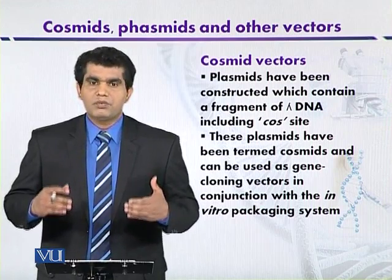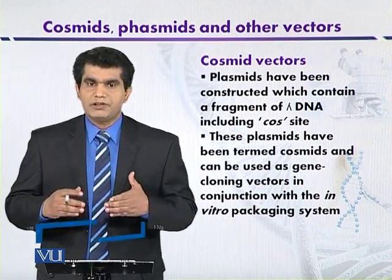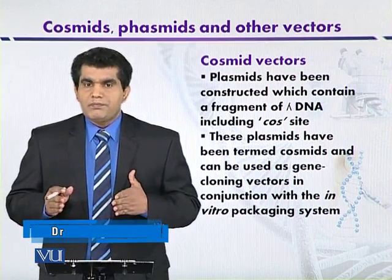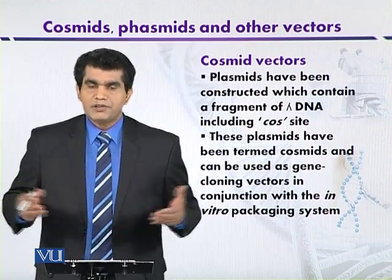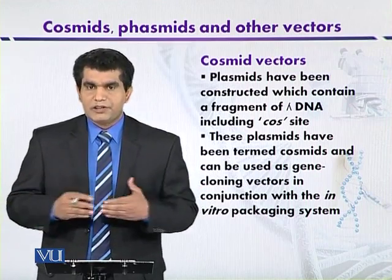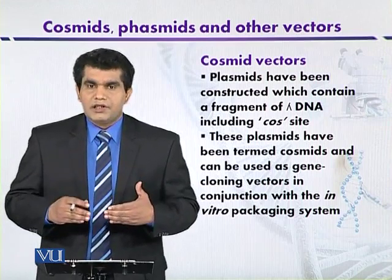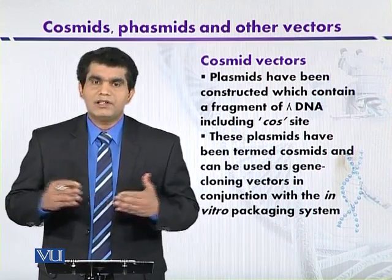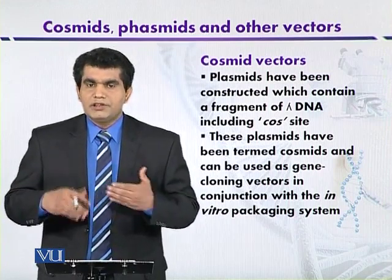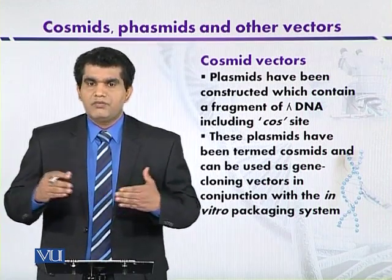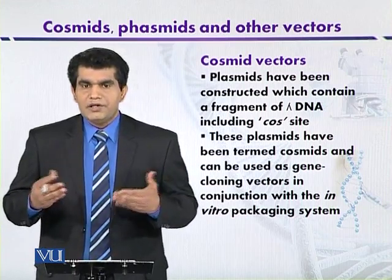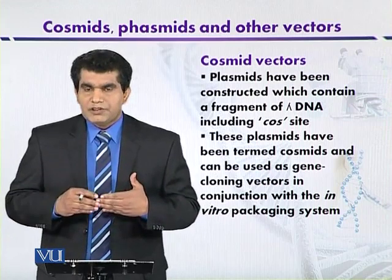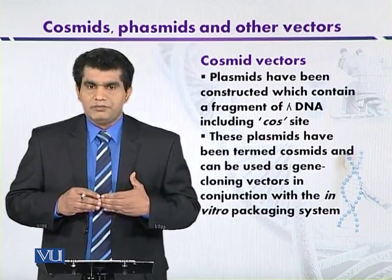If these cosmids are provided with an in vitro packaging system, then they can efficiently package the recombinant cosmids into the head of phage particles. When we compare cosmid vectors with other cloning vehicles like plasmids or the lambda vector, cosmids can clone larger fragments of DNA. For example, a cosmid of around 5 kilobase pairs in size can clone around 45 kilobases of foreign DNA, whereas plasmids or lambda phages can clone only 23 kilobases of DNA fragments.